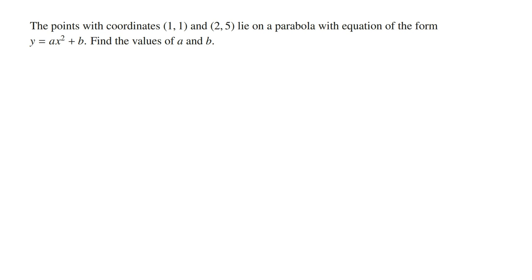The point (1,1) means that when x equals 1, y equals 1. And the point (2,5) means that when x equals 2, y equals 5. So if we sub these values into the rule of y, we can get the two equations in terms of a and b.